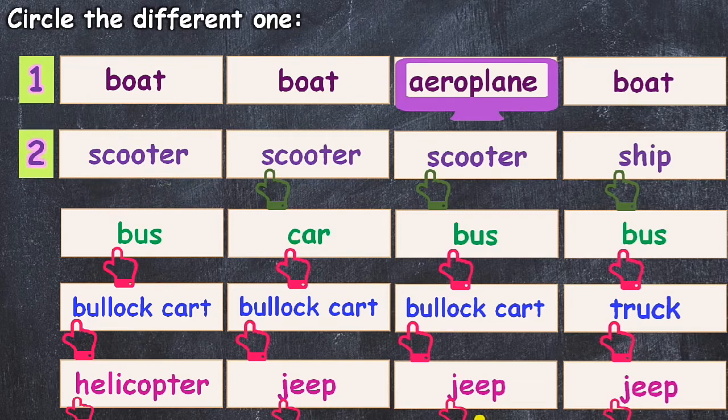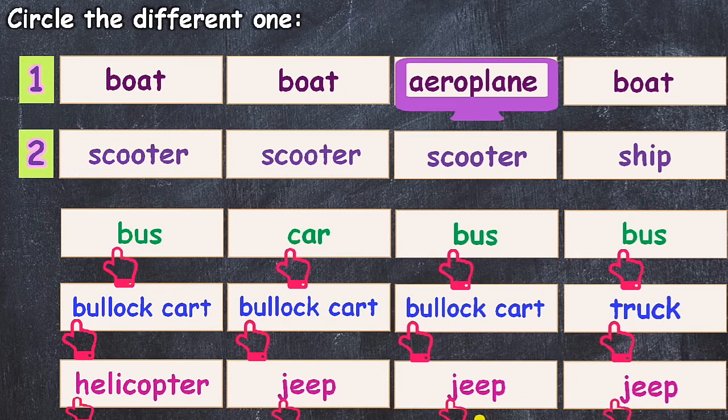Scooter, scooter, scooter, again scooter, then last one ship. Ship is the different one in second question.